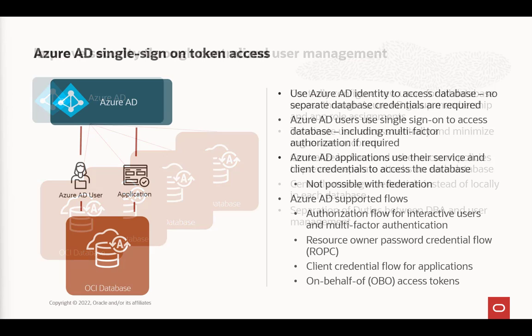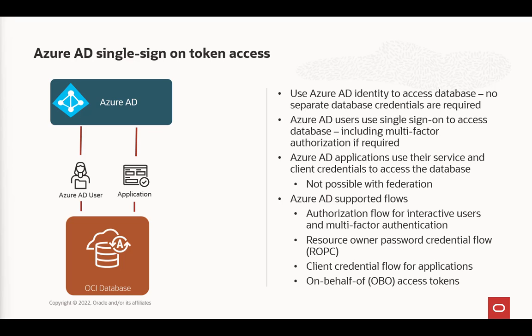This isn't just a benefit for security and DBAs — it also helps users. They have a single credential, their Azure AD identity, to connect with the database in OCI or another cloud. Applications can also be configured to connect with the OCI database — no more having to remember different credentials for different databases. Azure AD services and applications that use Azure OAuth 2 tokens can use that to connect with the database.